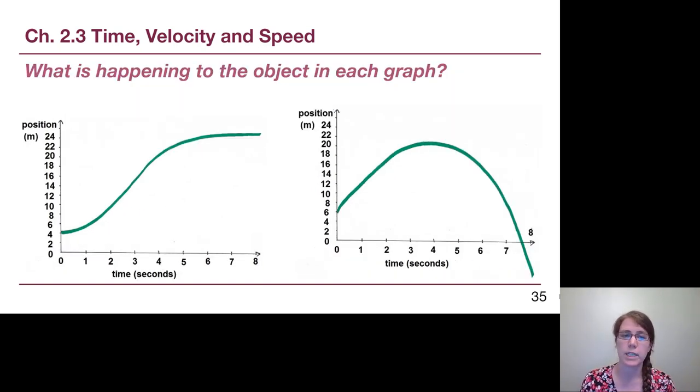Same kind of idea here, just describe in words what's happening to the object in each of these two graphs. On the left, let's think about this, we had an object that was kind of curving upwards, speeding up, in that middle time frame around three seconds, it's cruising at a almost straight line, and then it starts to slow down. So on the left, what we have is an object that is speeding up and then slowing down.